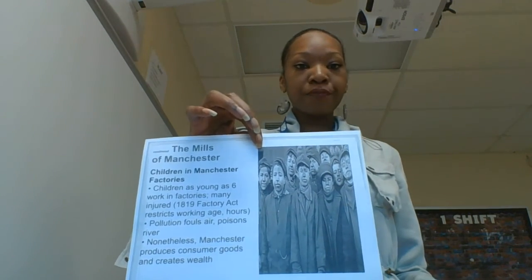This is a very important slide — I'm definitely going to ask questions about it. Children in Manchester factories: children as young as six years old worked in the factories and many were injured. In 1819, the Factory Act restricted the working age and hours. Pollution, hours, the air, poisons, and the rivers — all the stuff from the factories with no regulation on how to dispose of chemicals, it was getting in the air and poisoning the rivers. Nonetheless, Manchester produced consumer goods and created wealth, but they got it off of child workers. The same people who got rich off cotton did so because they enslaved African Americans.